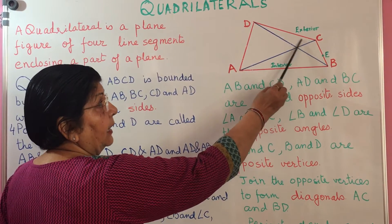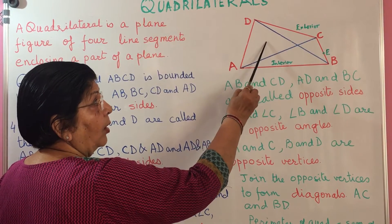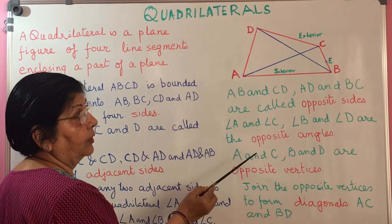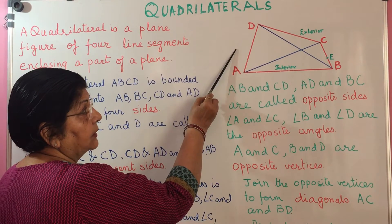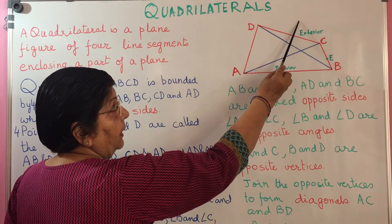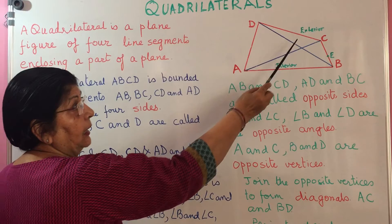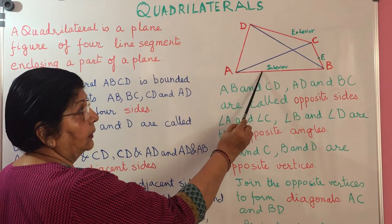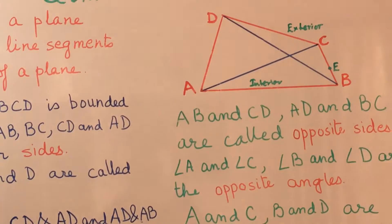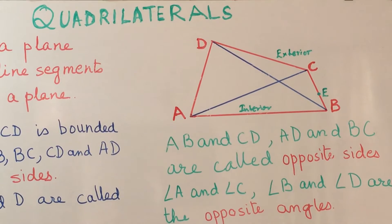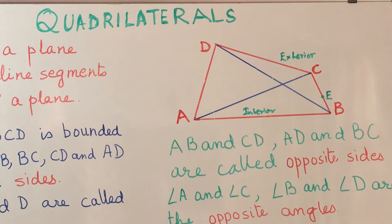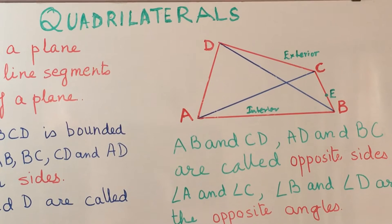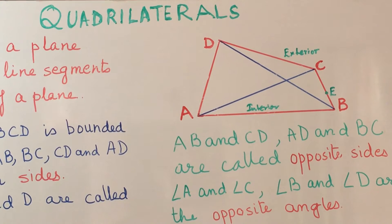Now this is the plane region of the quadrilateral. All points lying in this plane region are said to be in the interior of the quadrilateral. All points lying outside the plane region are said to be in the exterior. A point like E lying on line segment BC is a point on the quadrilateral. The line segments together with the plane region form what is known as the quadrilateral region.